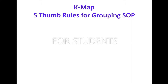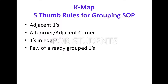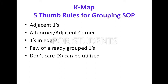Five thumb rules: First rule is adjacent ones. Second, all corners. Third, ones at the opposite edges — this is the most important rule where students commonly make mistakes. Fourth rule is already grouped ones; a few of those ones help to group in K-Map and we can utilize them. Fifth is don't care — if don't care helps you form the maximal grouping, we can utilize it.